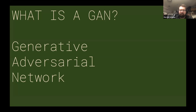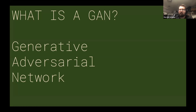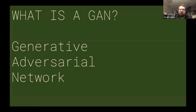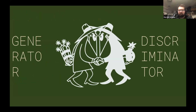GAN stands for Generative Adversarial Network. There are two different types of models you'll often come across: discriminative models, which decide whether something is of a category or true or false, and generative models, which produce new images, audio, or text. The adversarial part is that we combine both of these models. In a GAN there is both a generator and a discriminator, and they sort of play a game with each other — and this is how we train these models.